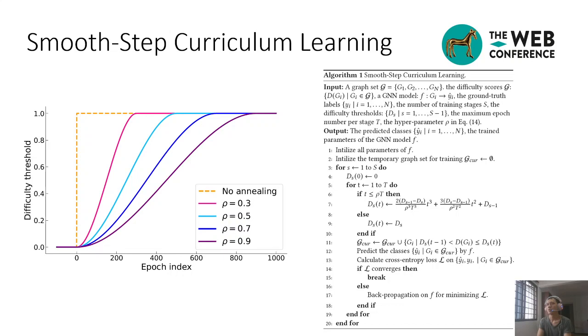Easy graphs can be seen as clean samples which have fewer redundant graph structures and less noisy labels, while the difficult graphs are noisy. At the early stages, CurrGraph feeds the graph neural network model only clean samples, helping graph neural networks to learn fundamental features while protecting them from being perturbed by noisy samples.